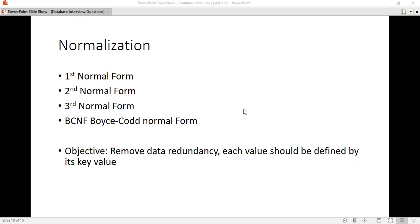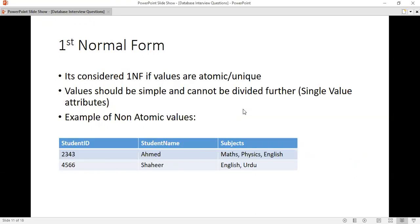First, let's look at the first normal form. In the first normal form, values should be atomic and should be single value attributes. I have shown this table. If you look at the subject column, there are no atomic values. Like Math, Physics and English, we have written in the second column. These are separated values. This is not our first normal form.